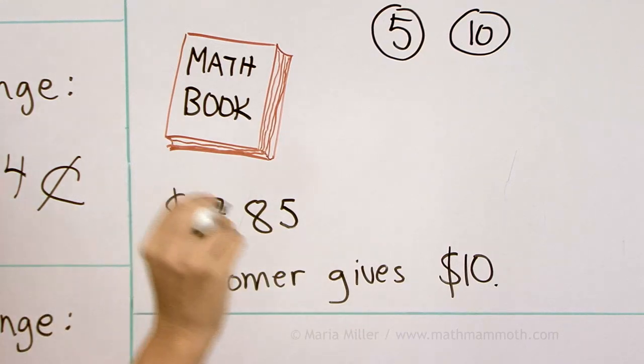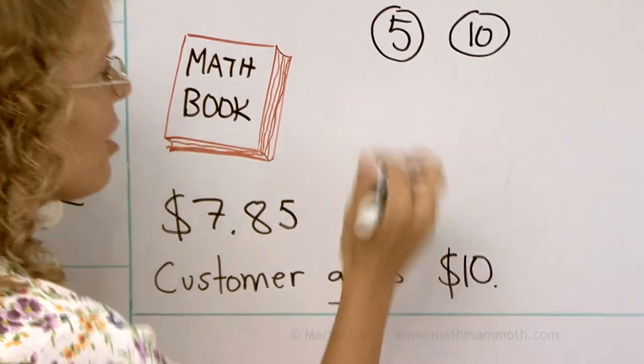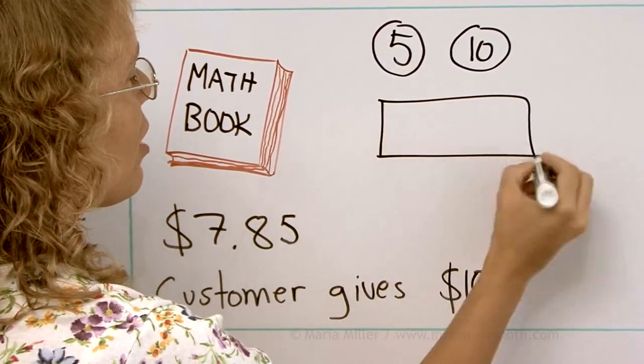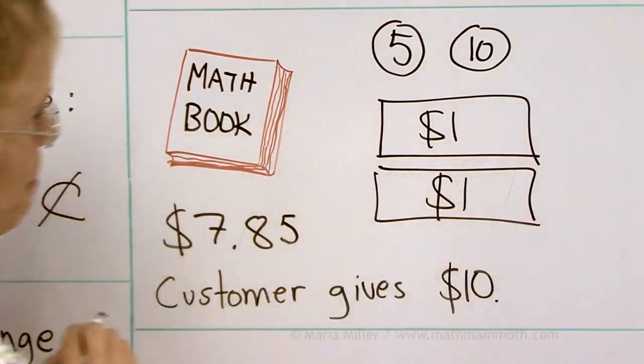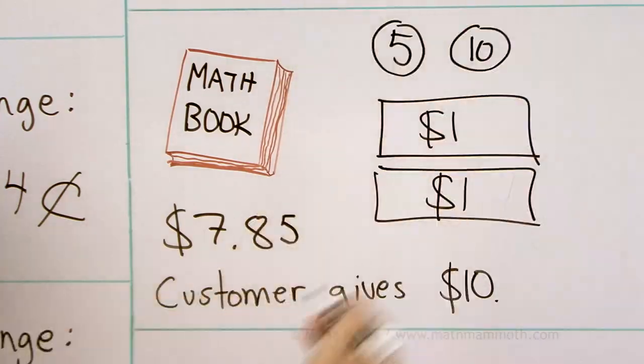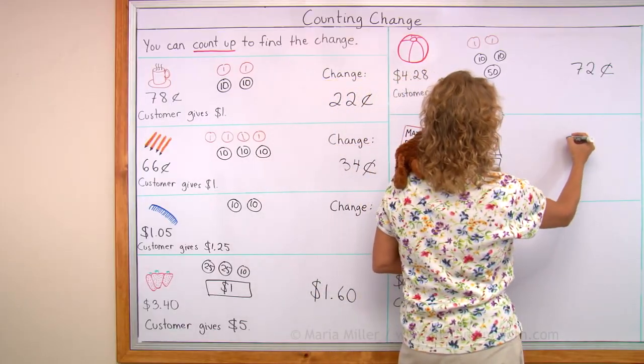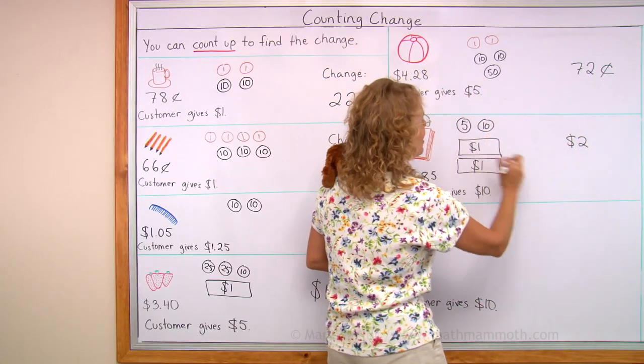From $8 to $10, we would need $2. A dollar and another. So this is our change. This is the change Matthew gets. $2.15.